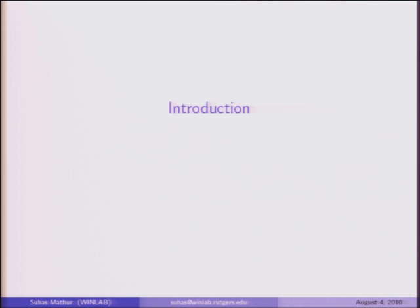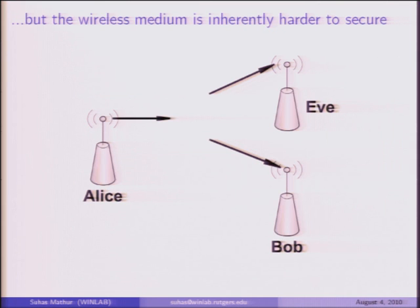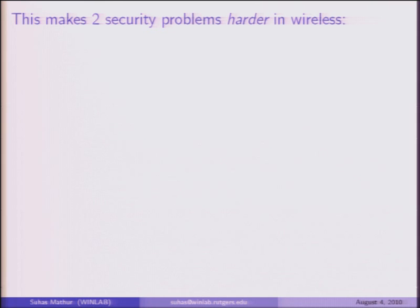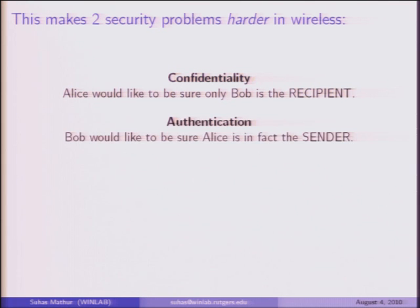Let me begin with an introduction to the first two parts by comparing wireless security with wired networks. Wired networks provide a very nice physical basis for security in the sense that they limit the data that travels on them physically on cables. Wireless is inherently harder to secure because it's a broadcast medium. If Alice wants to send a message to Bob, Eve can also hear that message, leading to two different security problems: confidentiality—where Alice would like to make sure that only Bob receives her message—and authentication—where Bob would like to be sure the message is in fact coming from Alice.